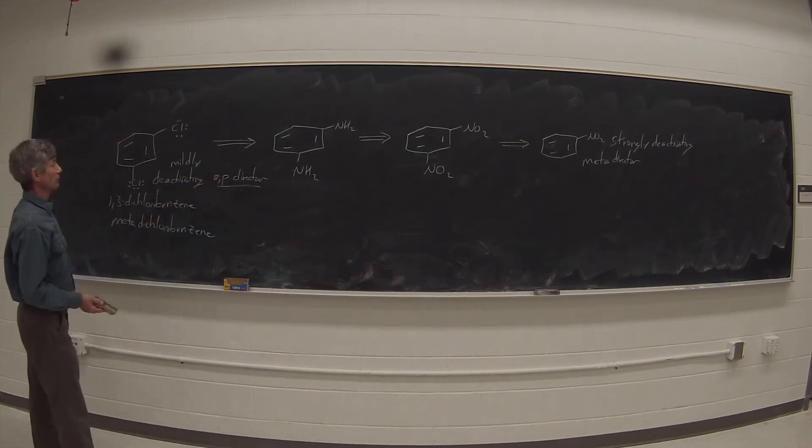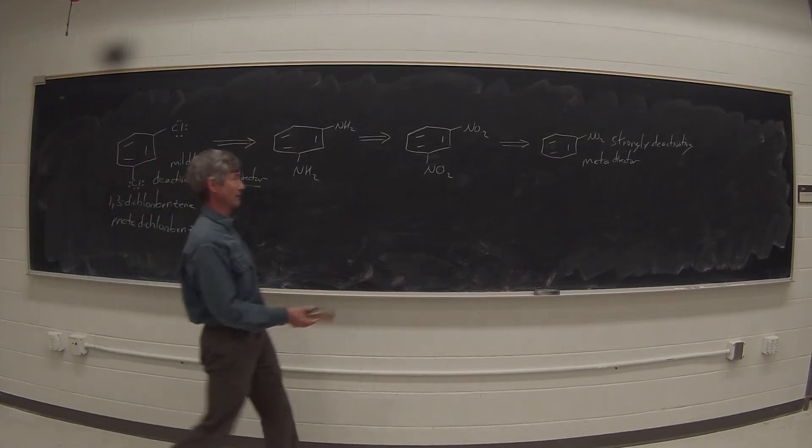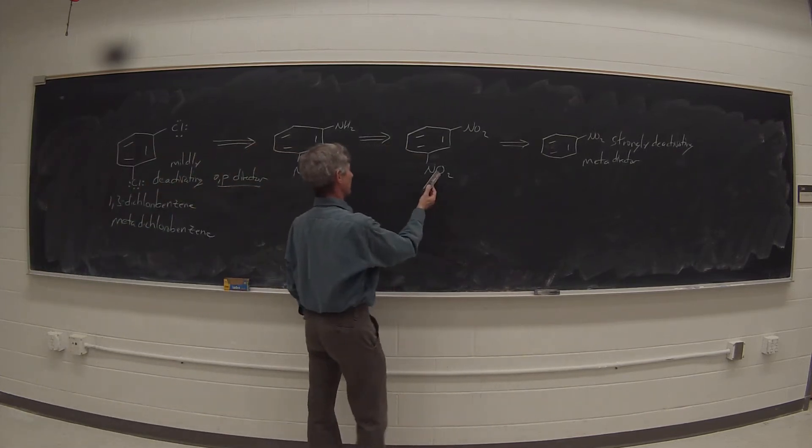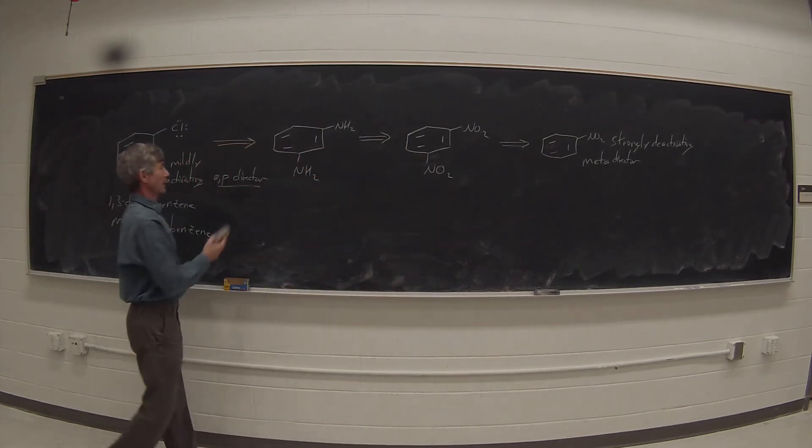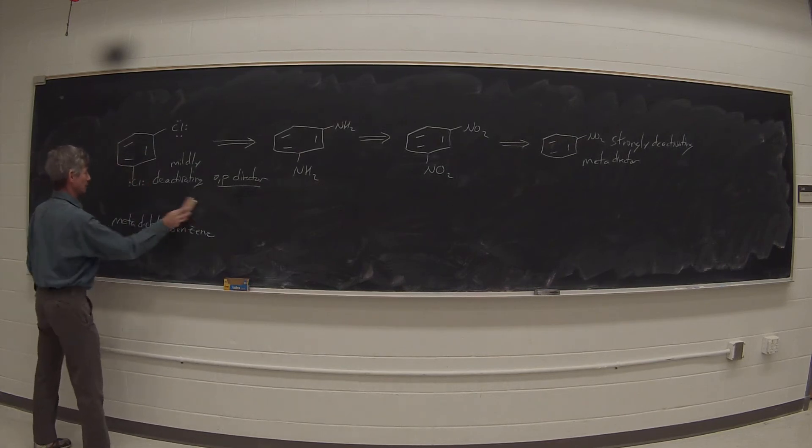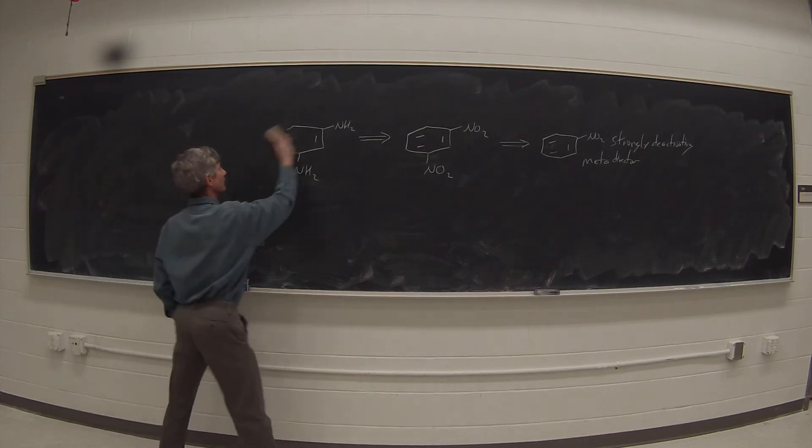So now we can turn around and work forwards. We know that we're going to start by making mononitrobenzene, and then make dinitrobenzene, and then reduce that to the di-amino compound, followed by introducing the chlorine with the Sandmeyer reaction.